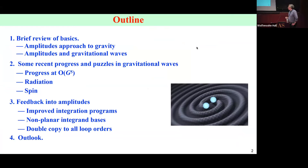For those who haven't seen this before, you might find it very surprising that scattering amplitudes can say something about gravitational waves because the problems look quite different. In collider physics — the natural place for quantum scattering amplitudes — we're talking about unbound trajectories, gauge theories, QCD, electroweak theory, quantum field theory. For gravitational waves, we're talking about bounded orbits, general relativity, and classical physics. They look like completely different problems.